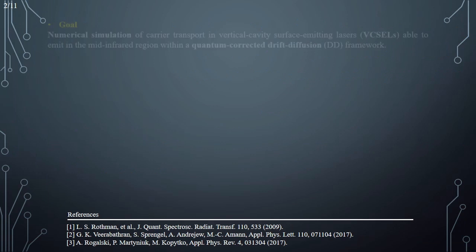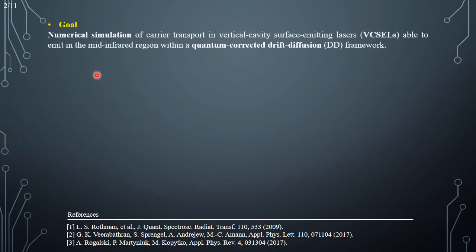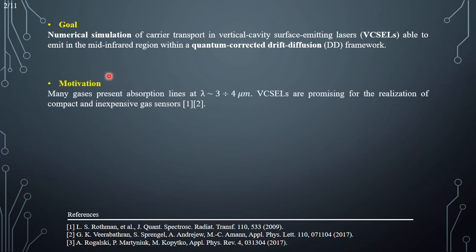The goal of this work is the realization of a numerical simulation of carrier transport phenomena in VCSELs which are able to emit in the mid-infrared region within a quantum corrected drift-diffusion framework. The motivation is that many gases present strong absorption lines in the wavelength region around 3 to 4 micrometers. Therefore, VCSELs are promising for the realization of compact, cheap, and inexpensive gas sensors.